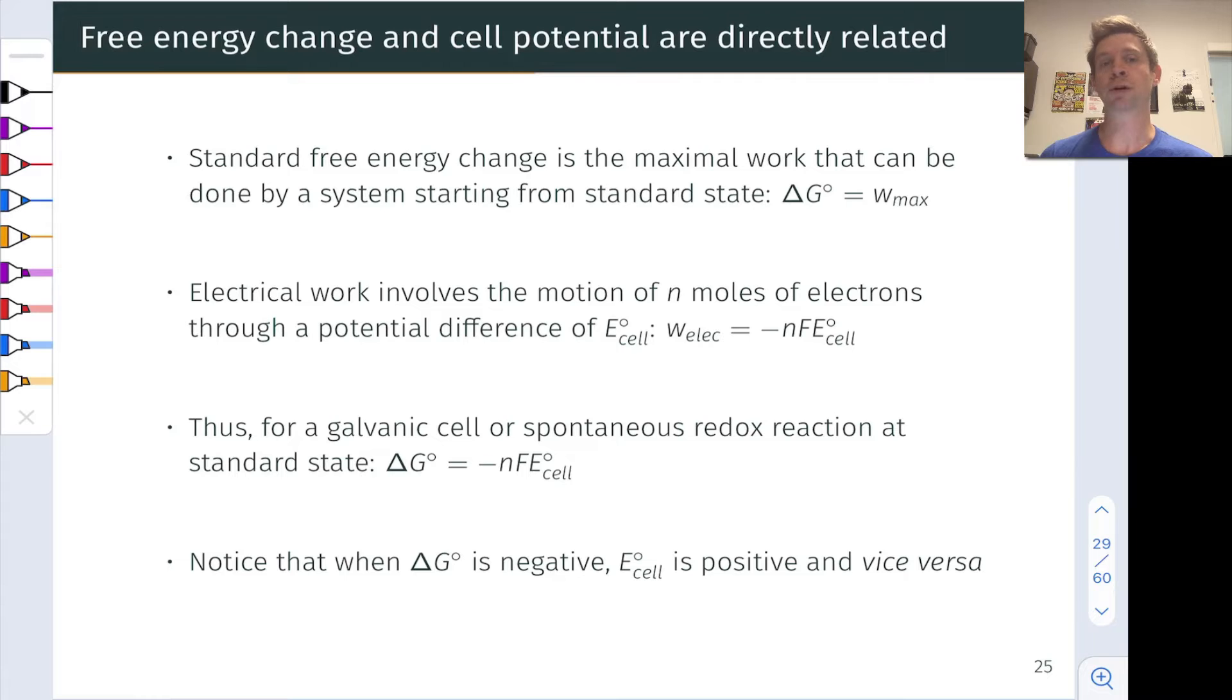Now in a galvanic cell, this corresponds to electrical work. This is moving charges, moving electrons through a wire or through some other kind of electrical load. And so we think here about the spontaneous redox reaction in the context of electrochemistry, doing work on the surroundings, doing work on a connected external circuit that represents an electrical load.